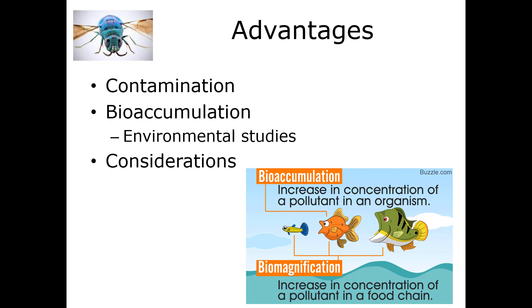The advantages of using maggots instead of body tissues for toxicology assessment can be seen in chromatography. Chromatographs obtained from larval extracts present less contamination than those obtained from human body samples. This is especially true if the body samples are decomposed. The maggots can actually protect some of these toxins in the body and keep them from being destroyed or contaminated by decomposing substances.